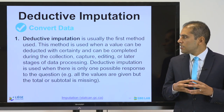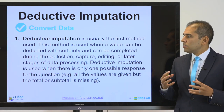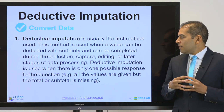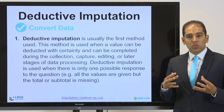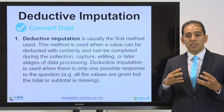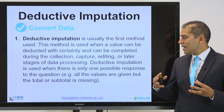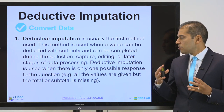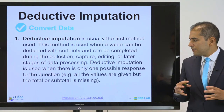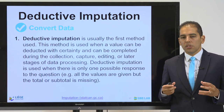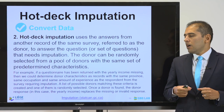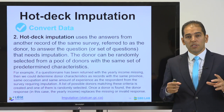Deductive imputation is usually the first method used. It is used when a value can be deducted with certainty and can be completed during the collection, capture, editing, or later stages of data processing. This method applies when there is only one possible response — for example, if all values are given but the total or subtotal is missing, so it's easy to replace it yourself. Still, you need to describe it in your data sheets.